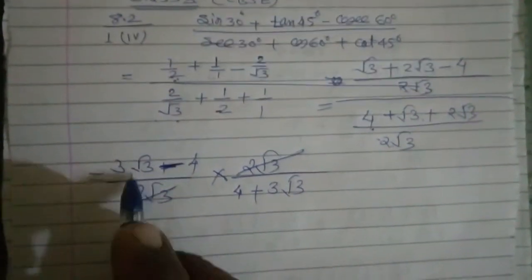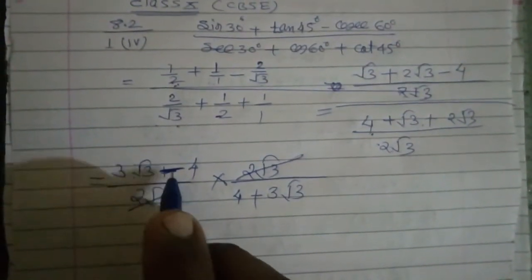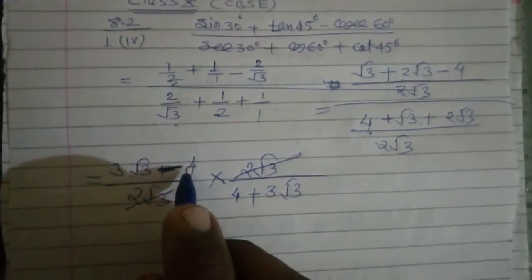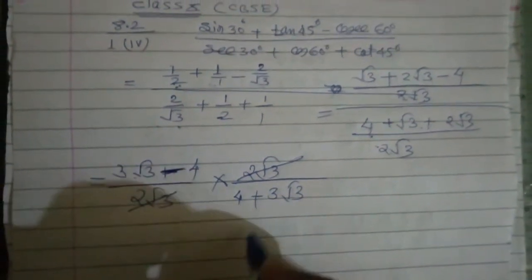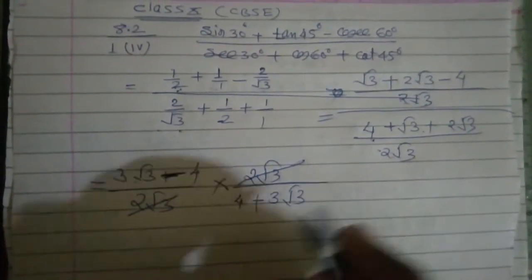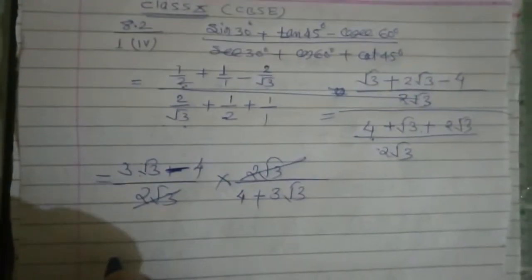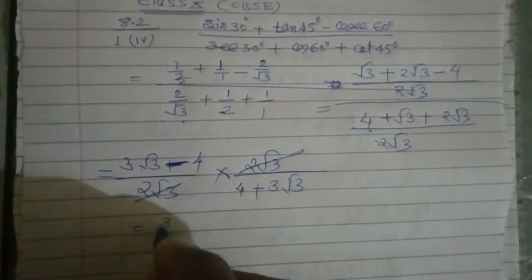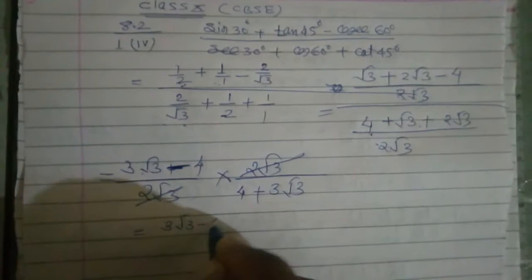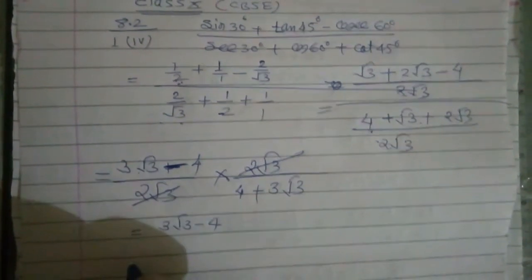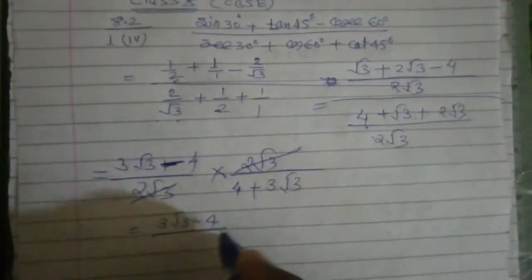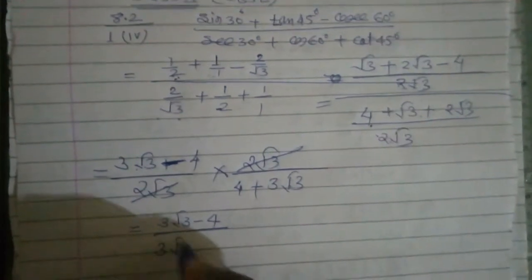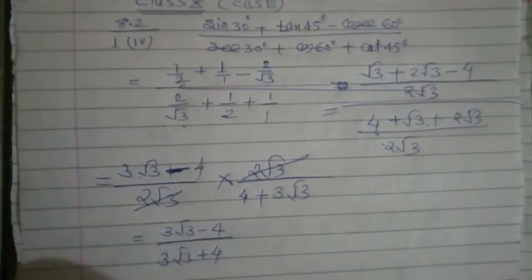ठीक है? अब क्या होगा? 3 root 3 minus 1, minus 4 upon 4 plus 3 root 3 — यह आएगा अपना। 3 root 3 minus 4. अच्छा — और यह अपना आया। अब यह दोनों plus के तो हम इसको ऐसा लिख सकते हैं: 3 root 3 plus 4 — ऐसा भी लिख सकते हैं।